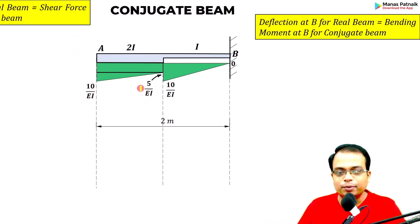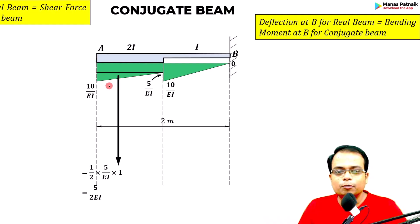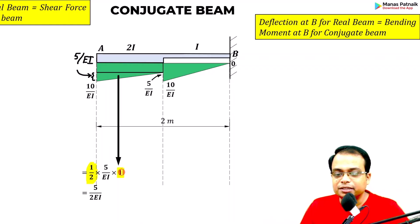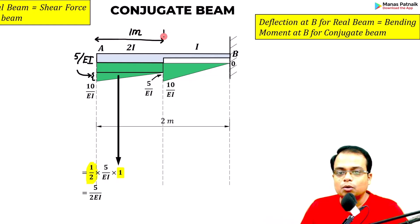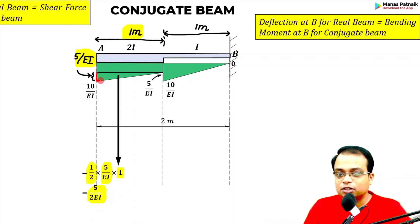Now convert the triangularly varying loads into point loads. For the small triangle on the left half — base 1 meter, height 5/EI — the equivalent point load is ½ × 1 × (5/EI) = 5/(2EI), acting at 1/3 from the right angle.